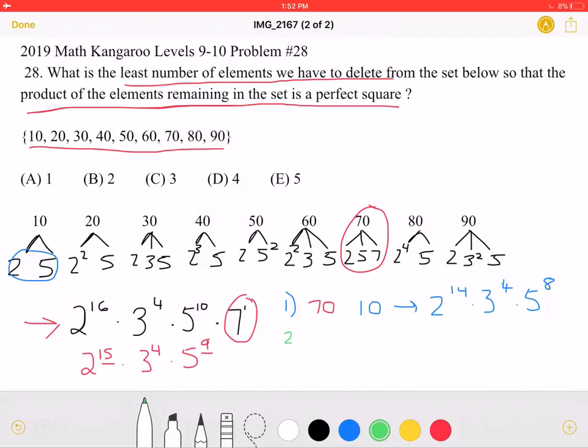Another way is to, again, remove a 70 and then remove 40. 40 is 2 to the 3rd times 5, so we would end up with 2 to the 12th times 3 to the 4th times 5 to the 8th.